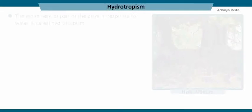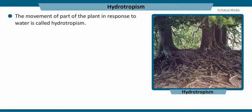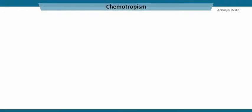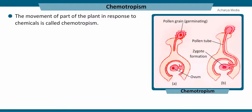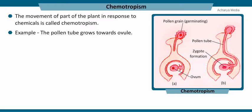Movement of part of a plant in response to water is called hydrotropism, and the root of the plant is always inclined towards water. The movement of part of a plant in response to chemicals is called chemotropism, and the best example is the pollen tube growing towards the ovule.